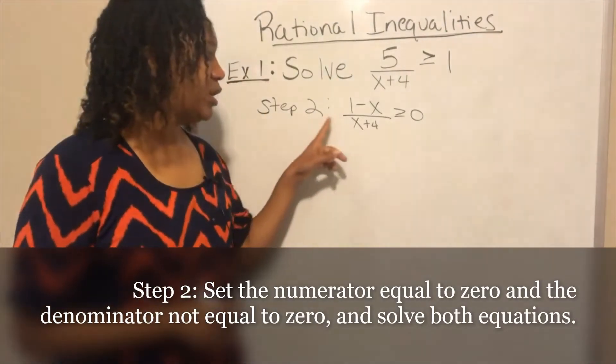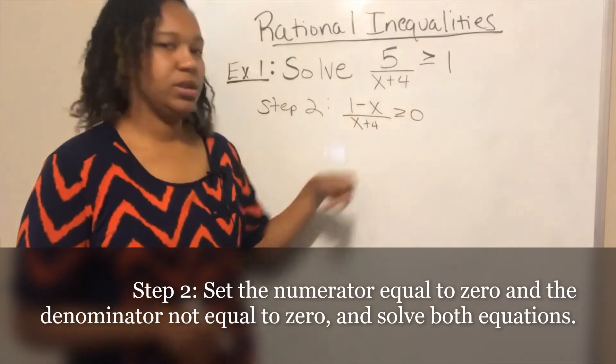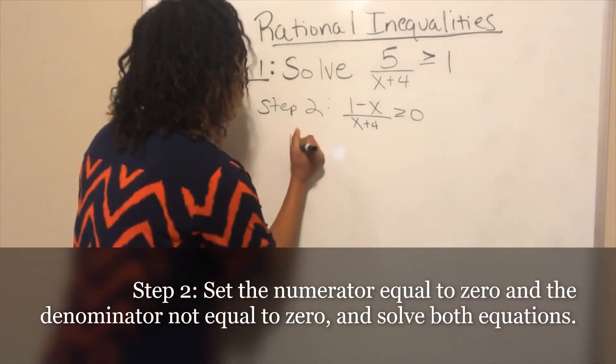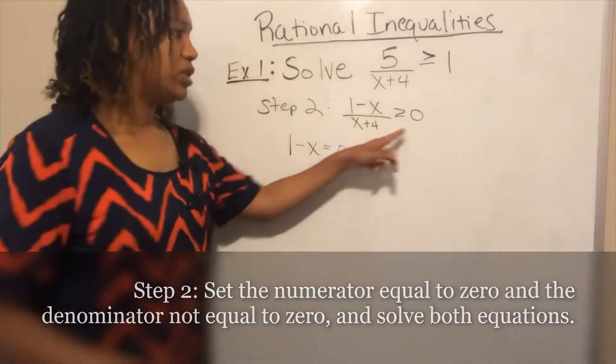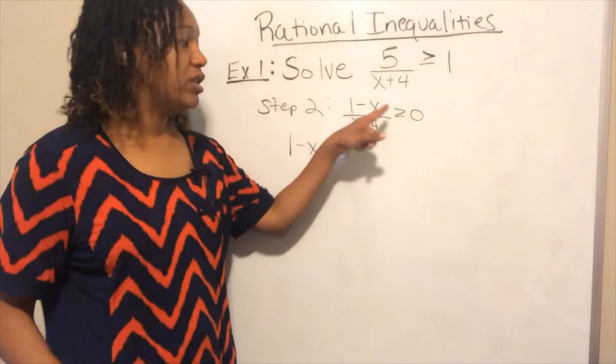For step two, we take the result from step one — one single fraction with zero on the other side. We set the numerator equal to zero to find what makes the fraction equal zero, and we set the denominator not equal to zero because the denominator of a fraction can never be zero. Solving the numerator: adding x to both sides gives x equals one. Solving the denominator: subtracting four from both sides gives x cannot equal negative four. These are our critical values for the number line.